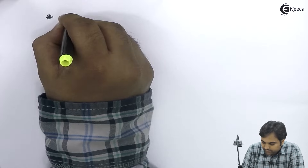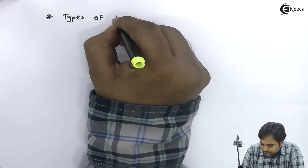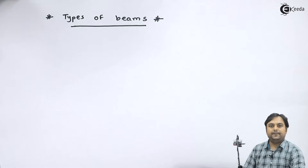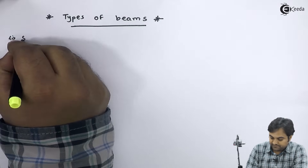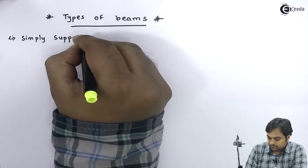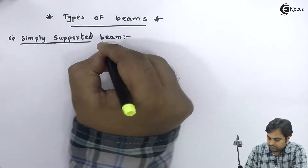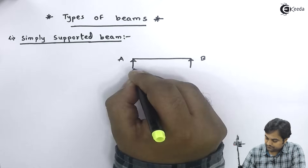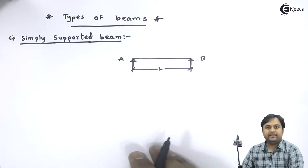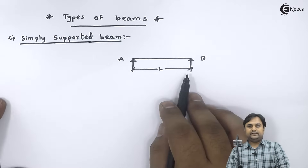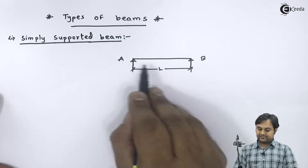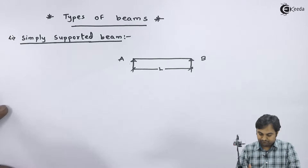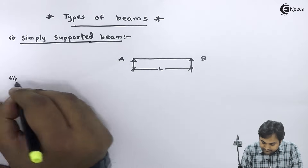First, I'll explain how many types of beams there are. The first one is simply supported beam. Here we have the diagram: if we have a beam whose length is capital L and it is supported at its extreme ends, that kind of beam is called a simply supported beam. Next is the cantilever beam.